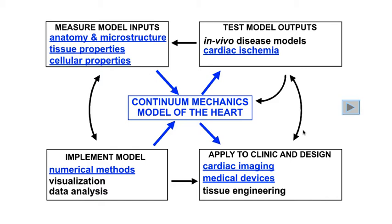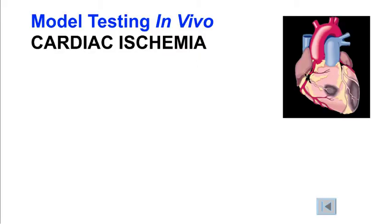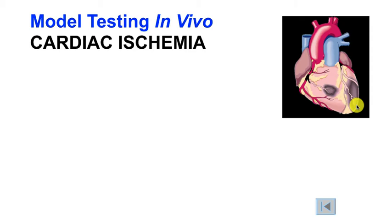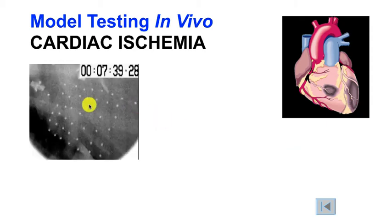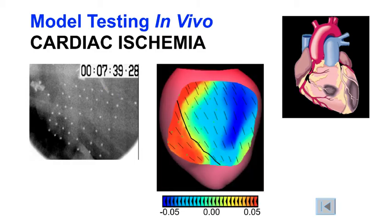Once we've run the model, we need to test the outputs by comparing them with quantities that we can measure, preferably in vivo in an intact beating heart. Cardiac ischemia occurs when one or more coronary arteries becomes blocked and the blood supply to a region of the heart wall is cut off. Almost immediately, contraction ceases because the cardiac muscle cells depend critically on oxidative phosphorylation to generate the energy required for the work of contraction. Cardiologists use measurements of abnormal wall motion during systole to estimate the size and location of the ischemic area. In this experiment, metal radiopaque markers were attached to the outside surface of the heart and recorded at high speed as the heart wall contracts. Strains on the surface were calculated before and after a coronary artery was ligated, causing this region to become ischemic.